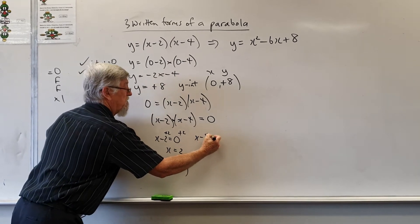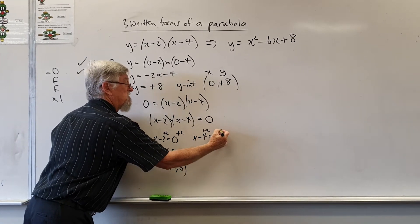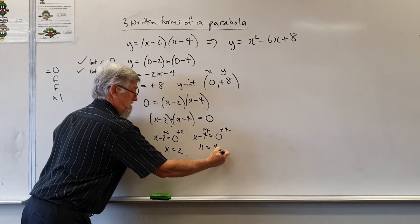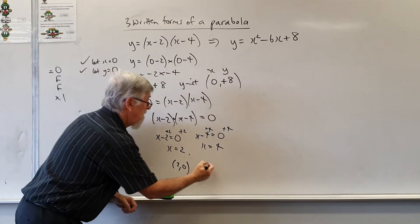The other one x minus 4 equals 0. So if I add 4 to that side add 4 to that side. What have I got this time? I've got 4, 0.